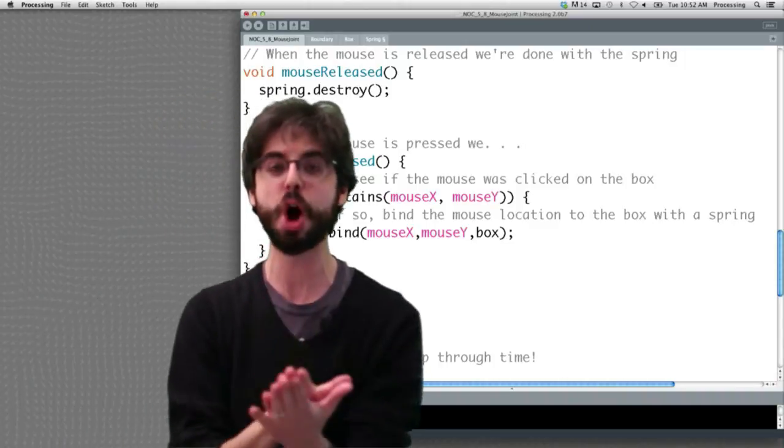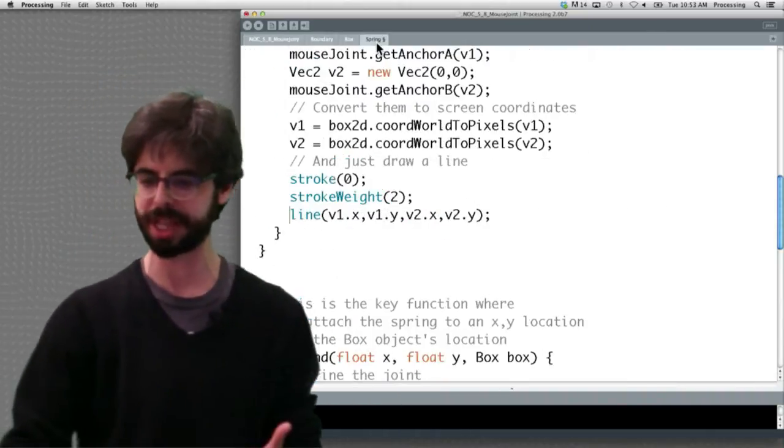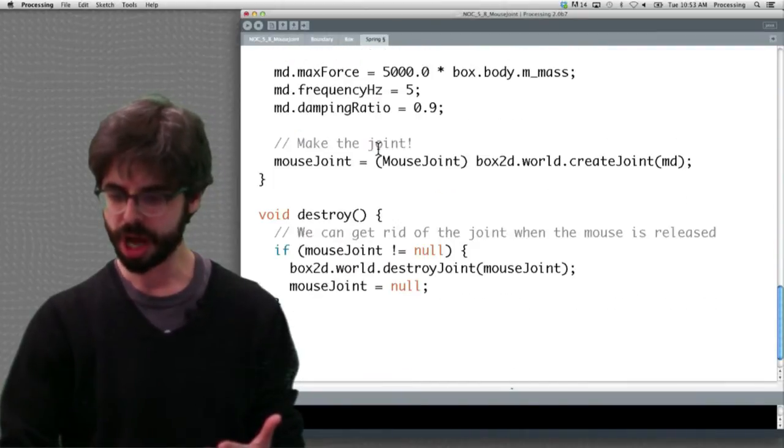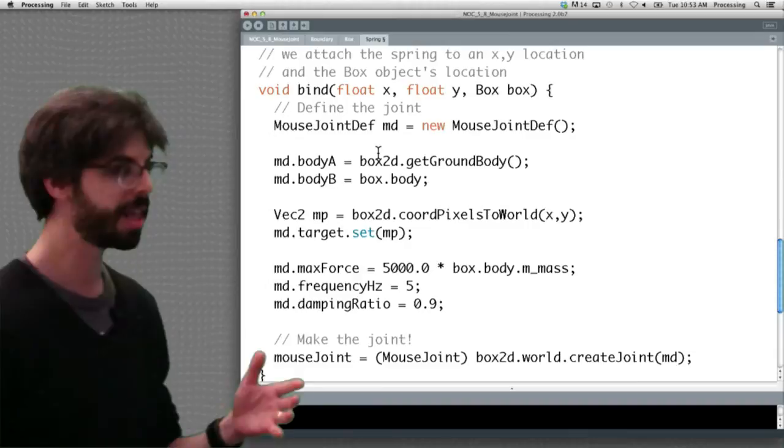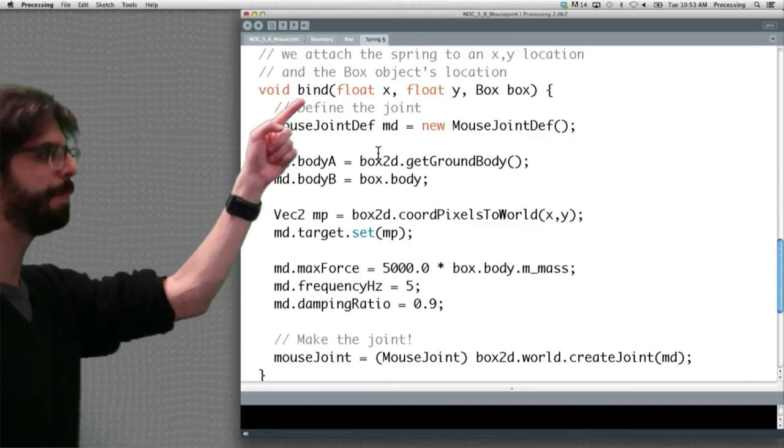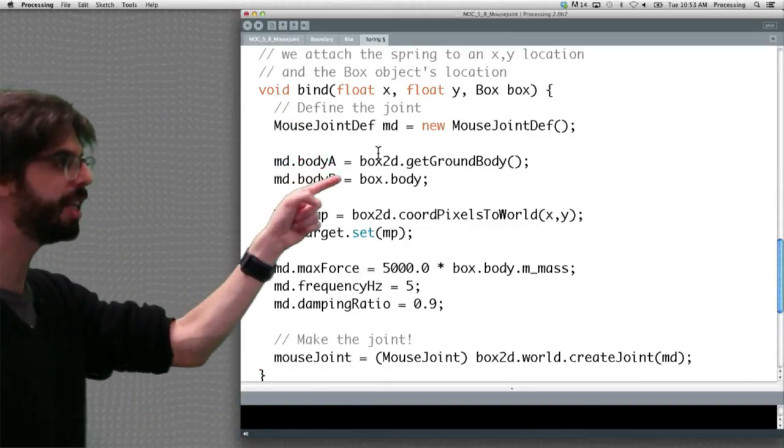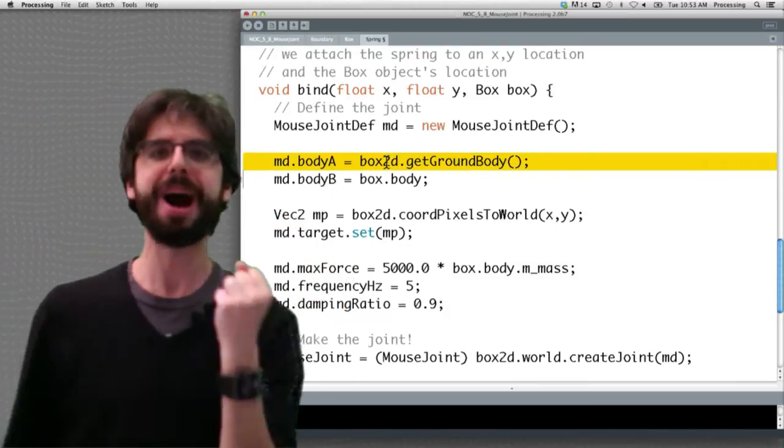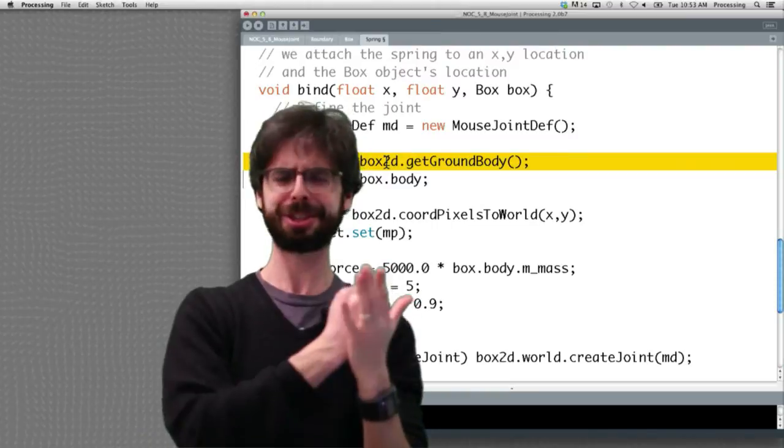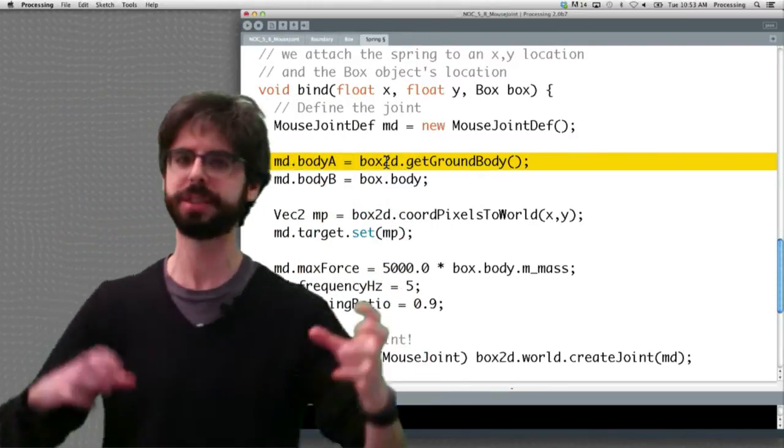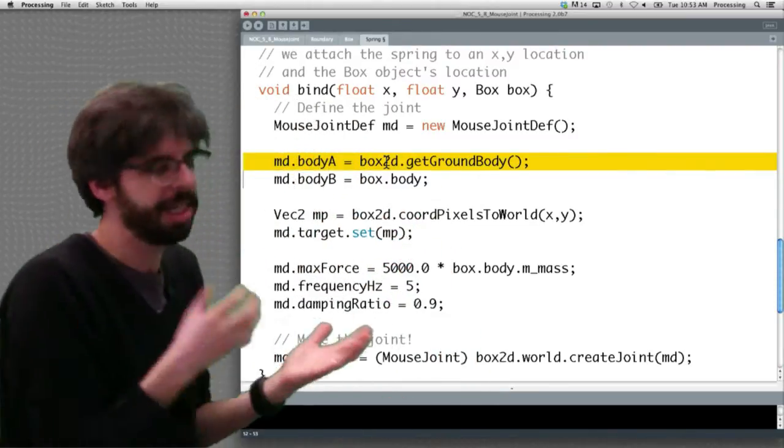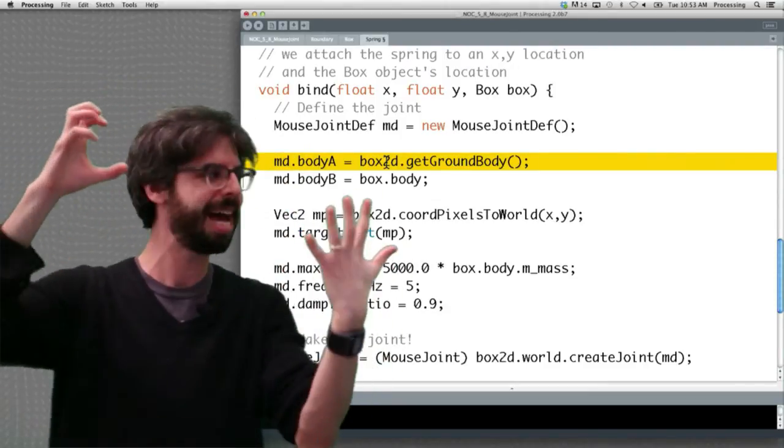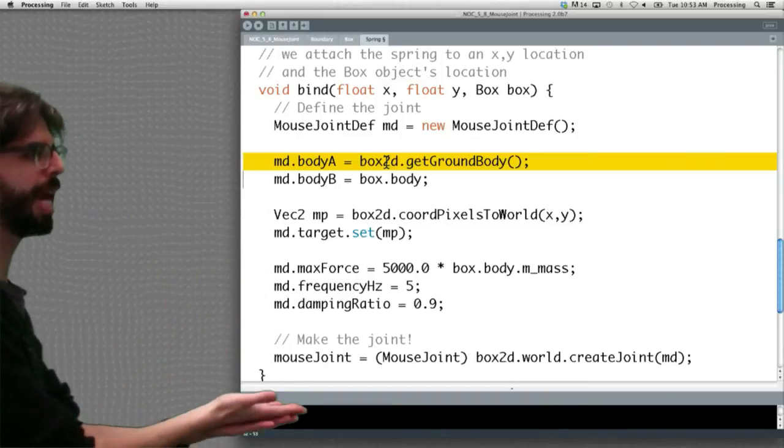The actual Box2D code is in that spring class. So we can see these moments, right? These moments are when we create the joint, right? That's binding it to that box. We make a mouse joint definition. Here's this crazy line of code. Body A is the ground body. We're just attaching it to the screen, the ground. Body B is the actual Box. So instead of a joint between two bodies, it is between two bodies, but instead of the two bodies the way we normally think of it, we have one body and then that ground. Then we set some parameters and we create that joint.